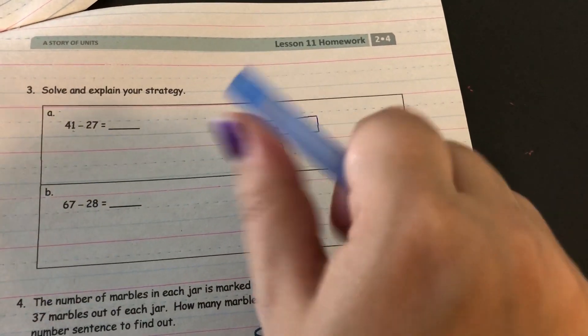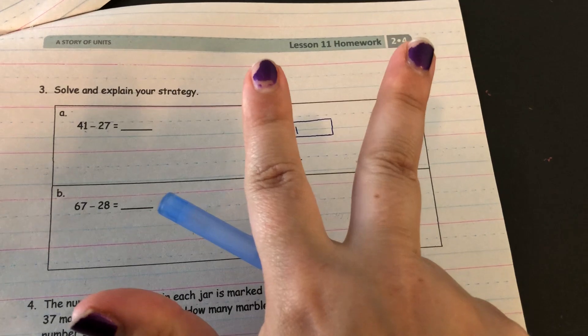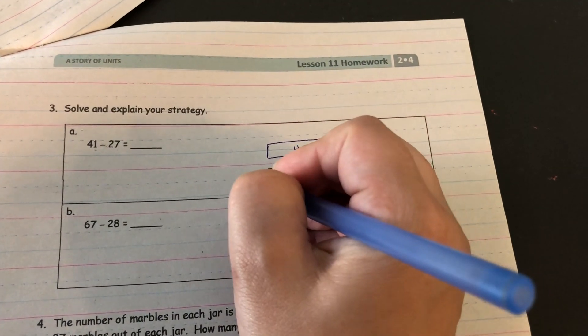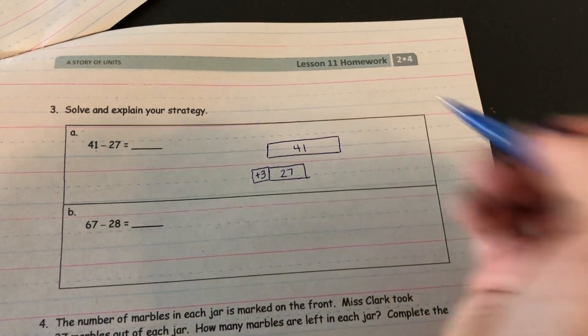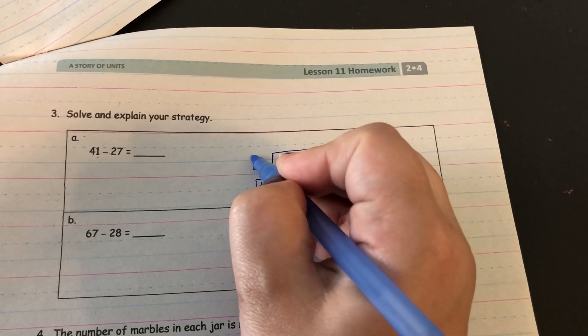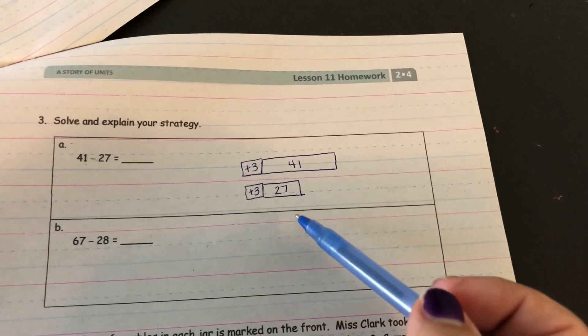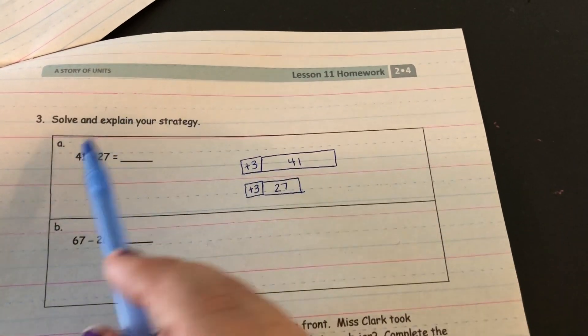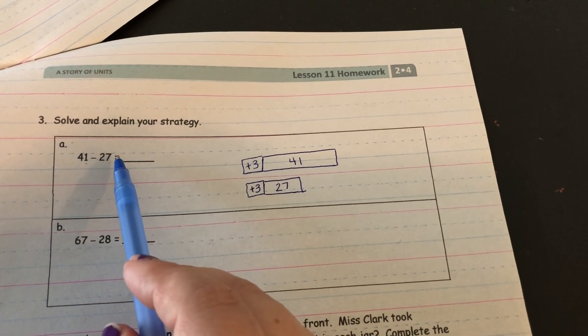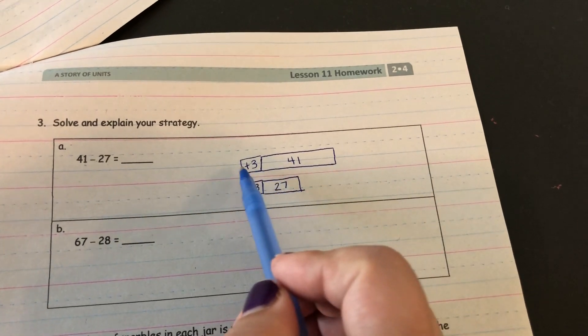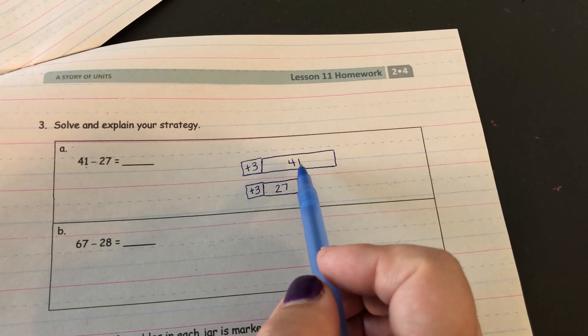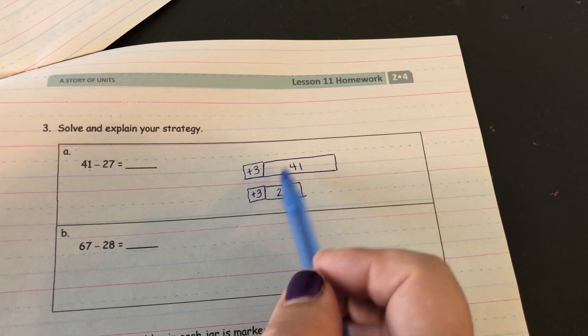So I'm starting off with 41 and I want to subtract 27 but I can't. So if I want to turn 27 into a multiple of ten I would need to add three. Because if I have 27 I go 28, 29, 30. So I'm gonna add three here. Which means I'm also going to add three here. So now I've got a whole new equation. Originally I had 41 minus 27 but now I have 41 plus 3. So if you're thinking, okay what is 41 plus 3? Just count up. 42, 43, 44.